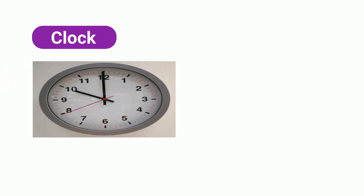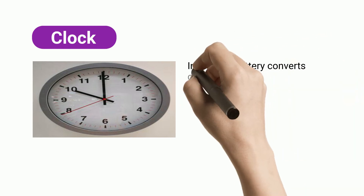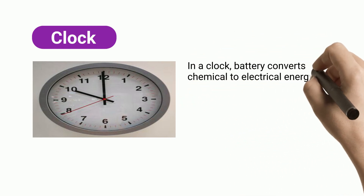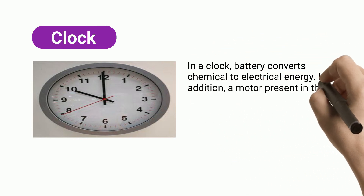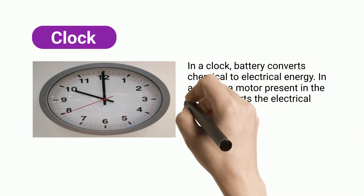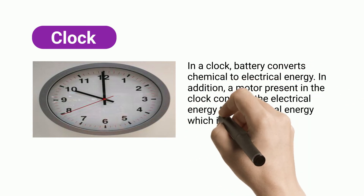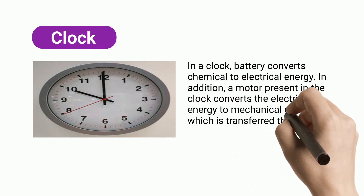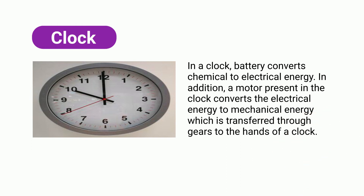In a clock, the battery converts chemical to electrical energy. In addition, a motor present in the clock converts the electrical energy to mechanical energy, which is transferred through gears to the hands of the clock.